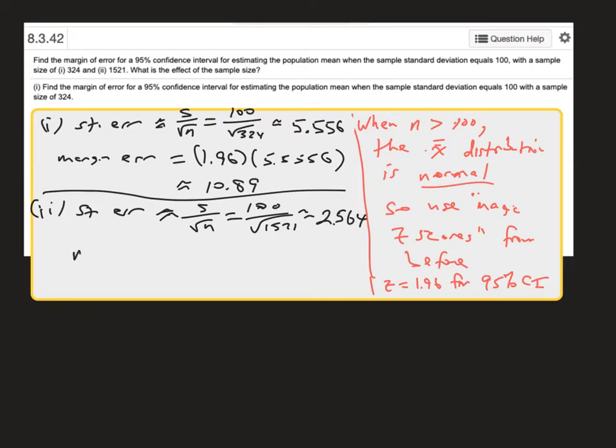And so margin of error is 1.96 times that, and that is about 5.03 to two decimal places.